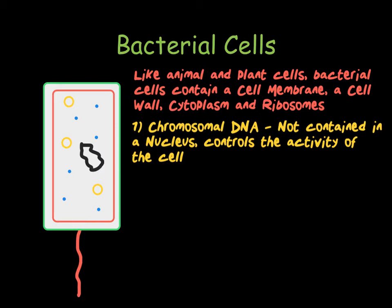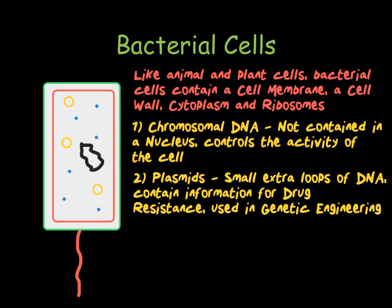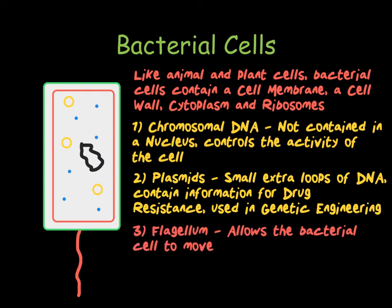And just like the nucleus, it controls the activity of the cell. We also have plasmids. These are small loops of extra DNA. They're not part of the chromosome, but they can contain genes for things like drug resistance and can be passed between different bacteria. Plasmids are used heavily in genetic engineering. Finally, we have the flagellum, or if there is more than one, the flagella. This is a long hair-like structure that allows the bacteria to move — towards food or away from toxins that would be harmful to it.